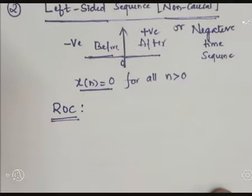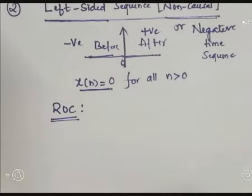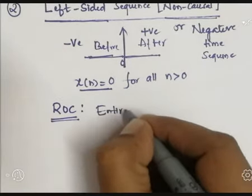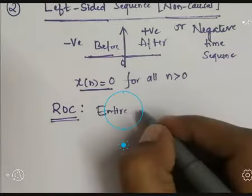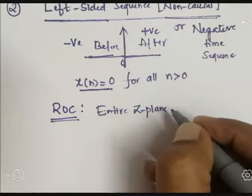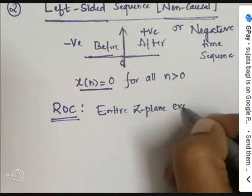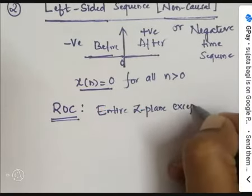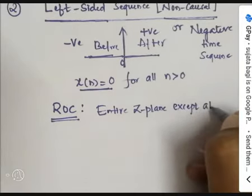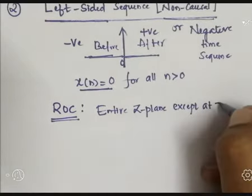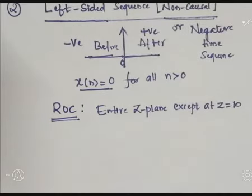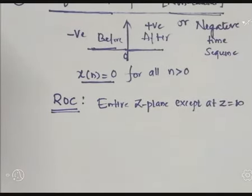The ROC is the entire Z-plane, but except at Z equal to infinity. So this we will discuss by taking one example.